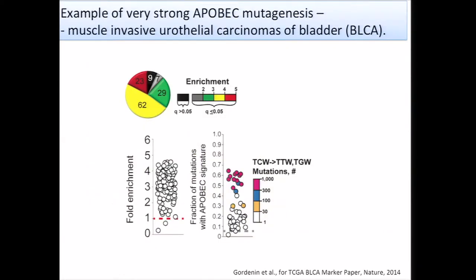An example of why APOBEC mutagenesis is of interest to TCGA is that it can be really overwhelming in at least some cancer types. The black sector represents just nine samples of bladder carcinomas not enriched with APOBEC mutagenesis; the remaining 130 samples are enriched. Fold enrichment can be up to five-fold compared to randomly expected, and it could be up to 70 percent of mutations in the exome with a stringent APOBEC signature.